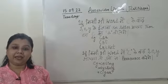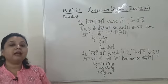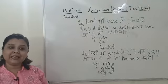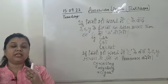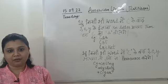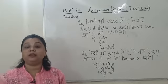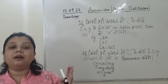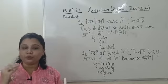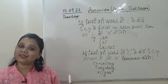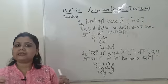C-A-R 'car', C-A-R 'car', and C-I-G-A-R 'cigar'. So this is the difference between 'ka' and 'sa'—that where to use 'ka' and where to use 'sa'. So thank you.